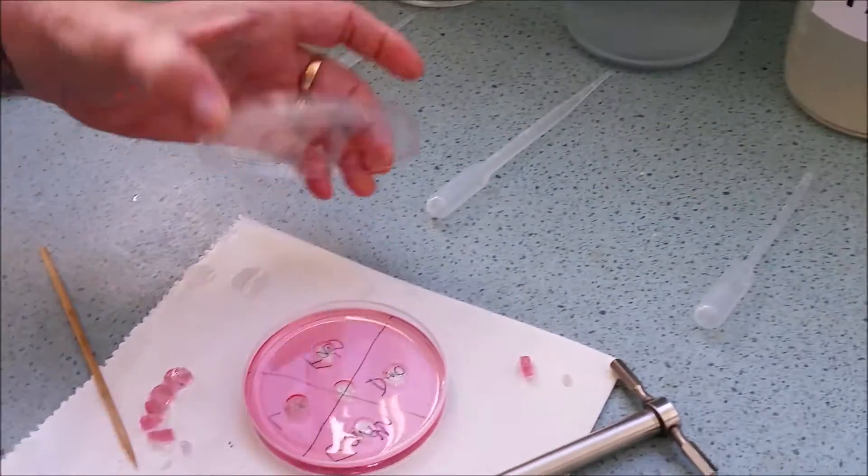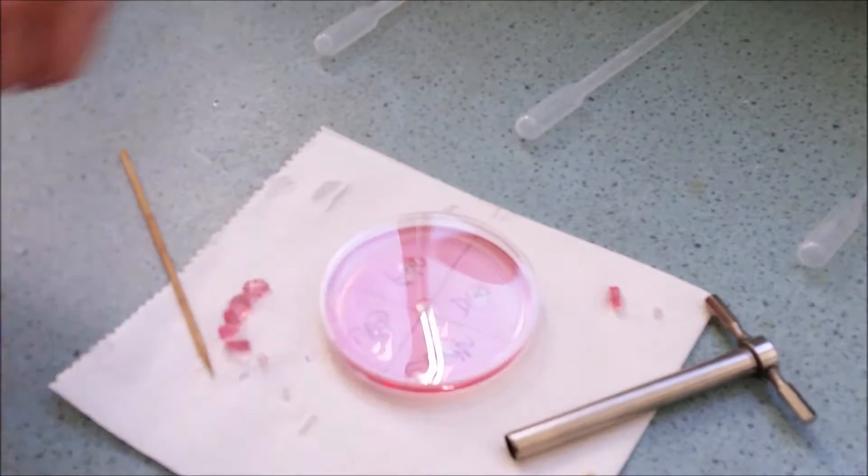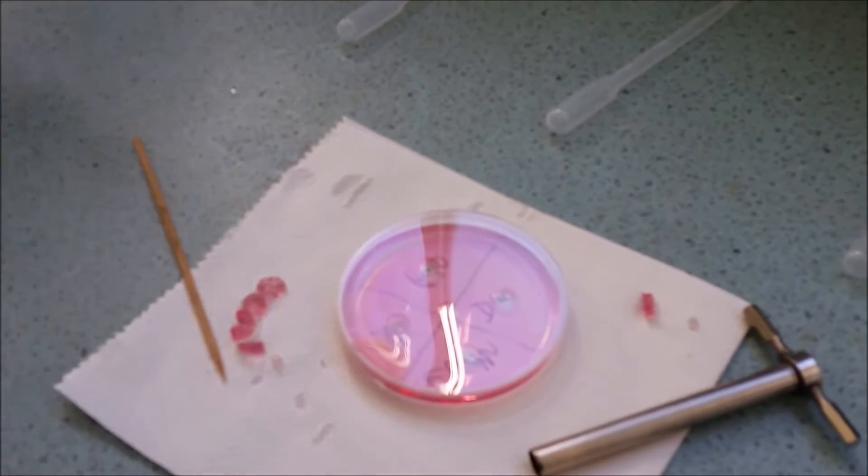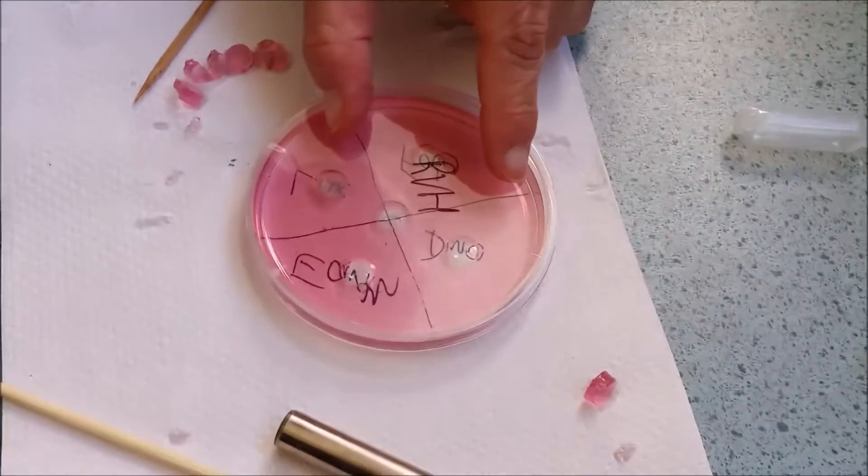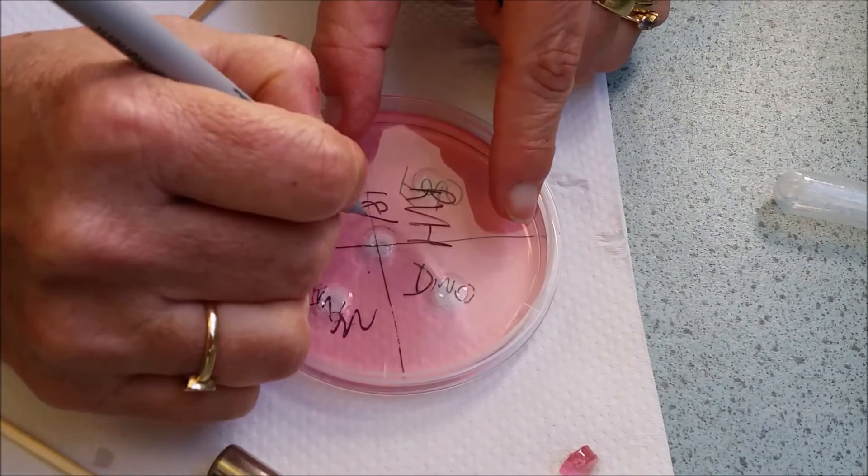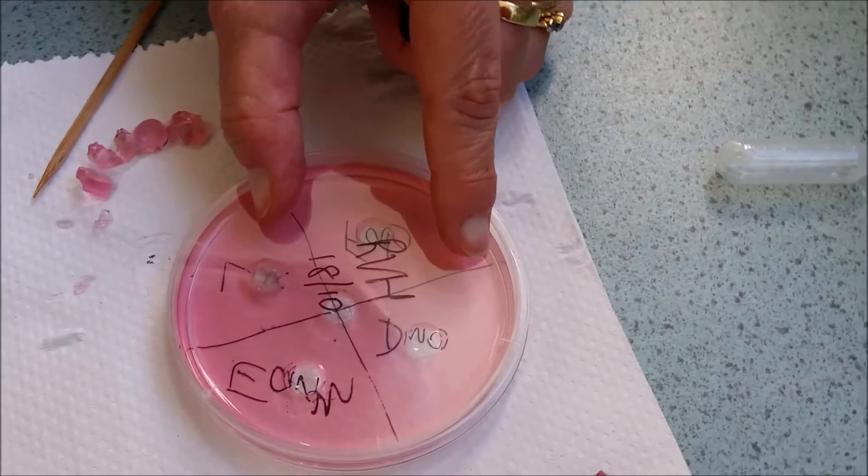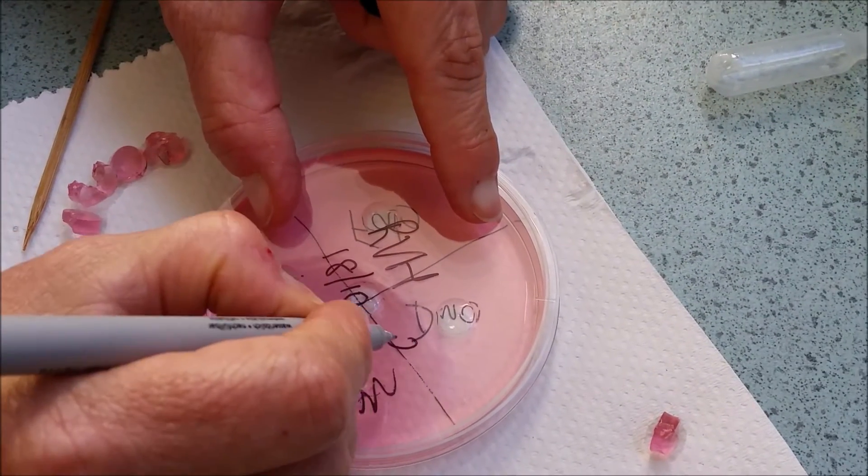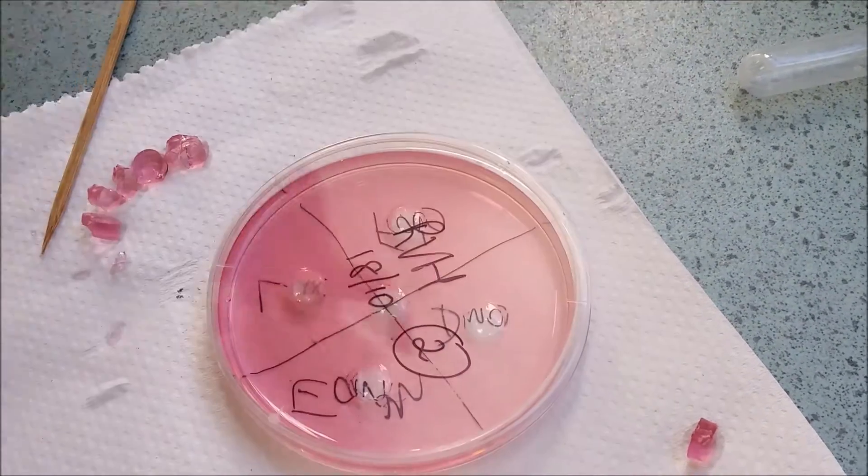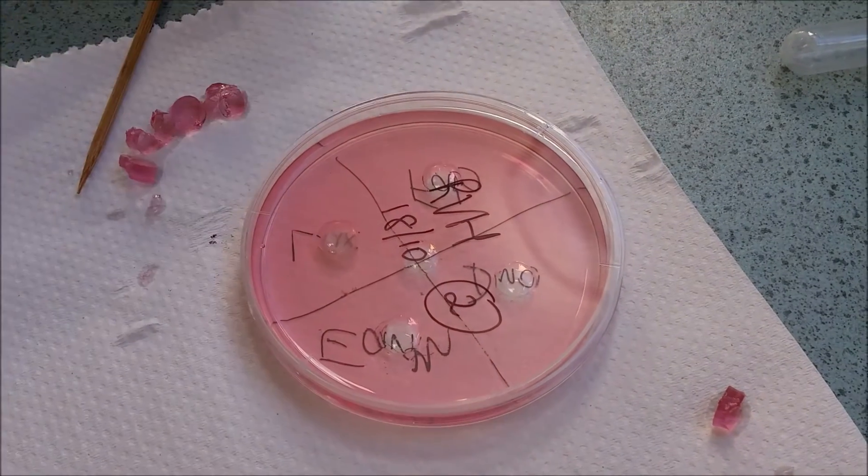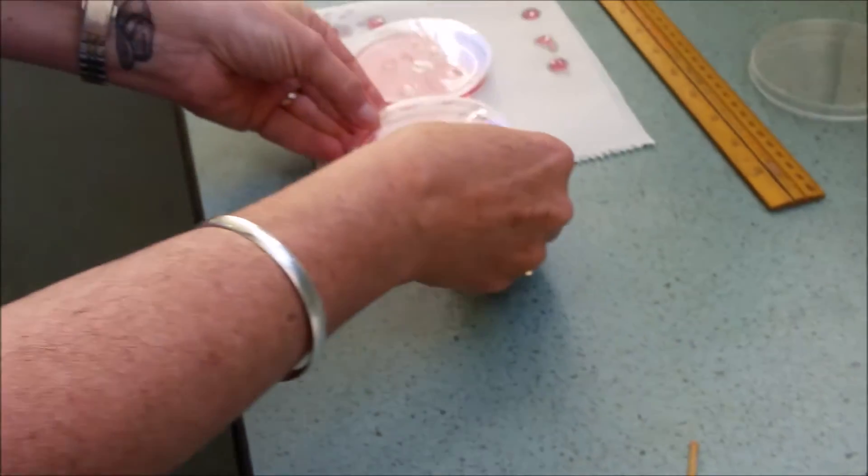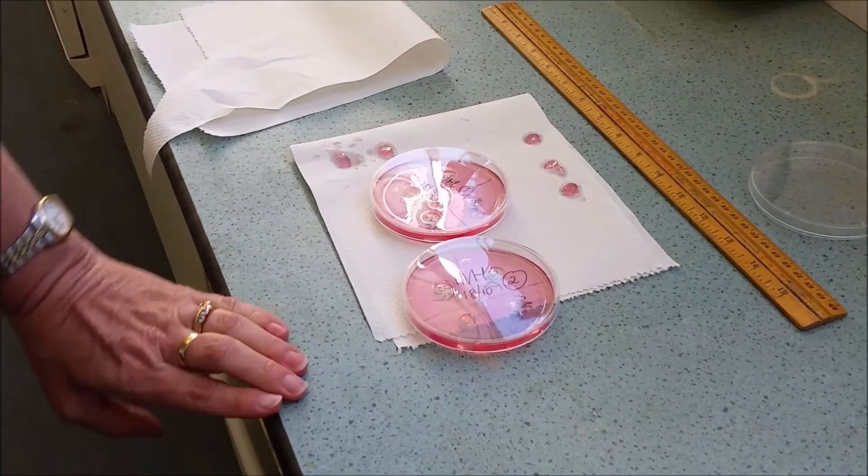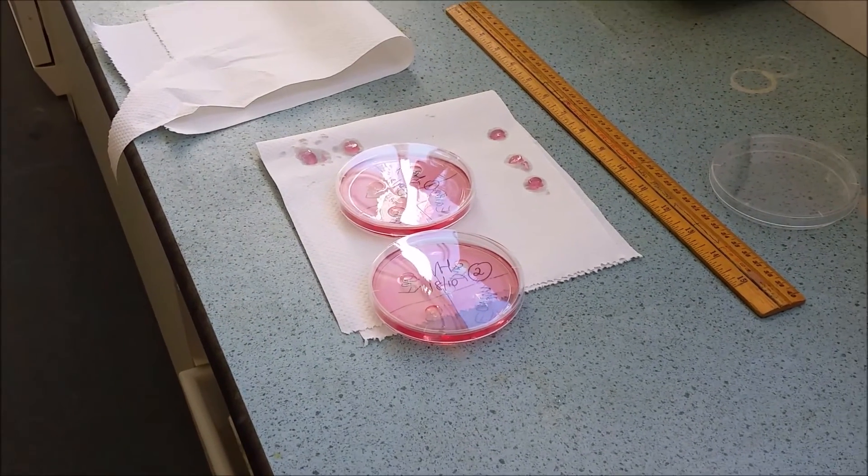Now I'm going to place the petri dish lid back on the top. I'm going to label it. Normally when you're doing lab work, it's a good idea to date it. And since I've prepared one earlier, this is my second. We'll do two. And we'll place them somewhere cool. And that's the procedure that you'll be following.